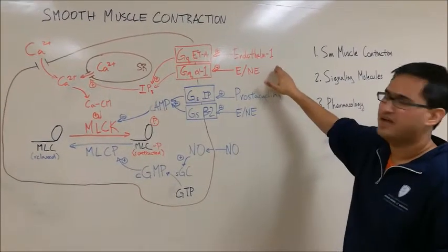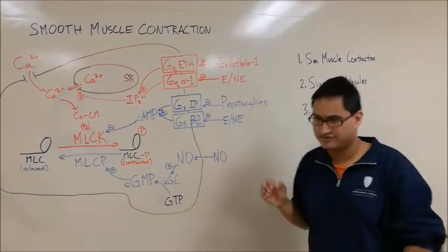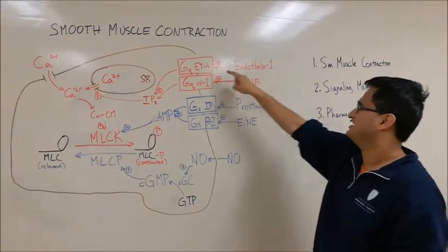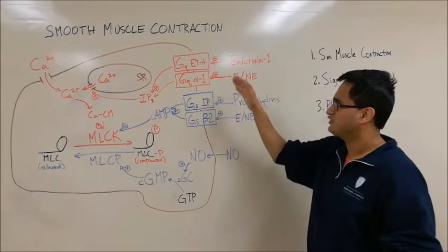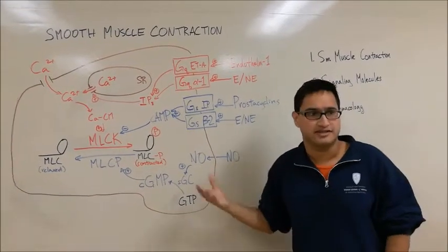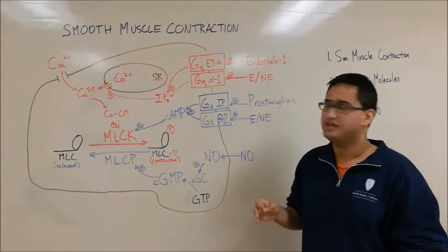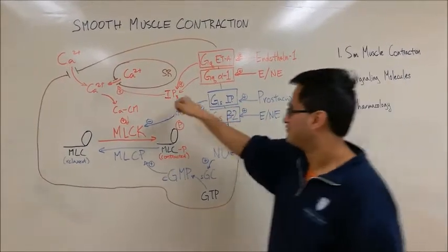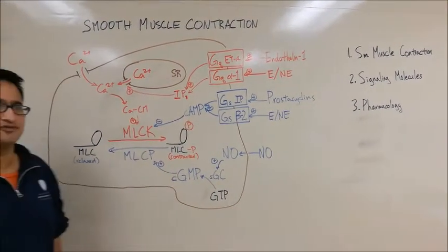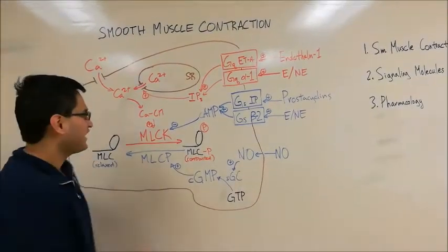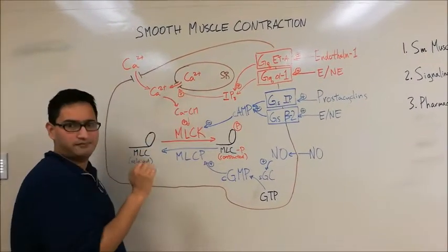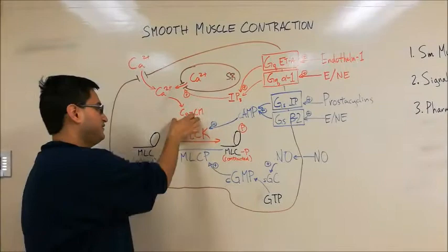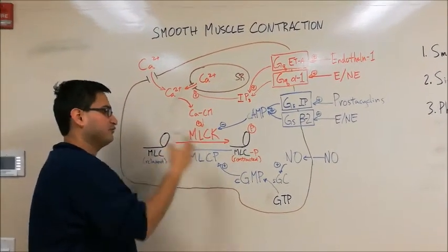Let's start with endothelin-1. Endothelin-1 is a molecule produced by endothelial cells of these arteries, and it's sent in a paracrine fashion to smooth muscle cells to tell them to contract. It binds to the ETA receptor, which is a Gq GPCR. Gq GPCRs activate phospholipase C, or PLC, which converts PIP2 into DAG and IP3. The IP3 travels to the sarcoplasmic reticulum — the endoplasmic reticulum in muscle cells — and causes it to release calcium ions into the cytosol.